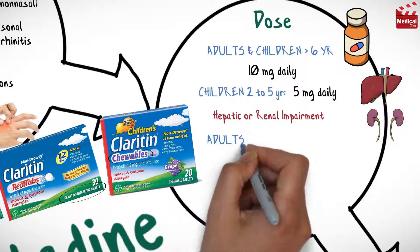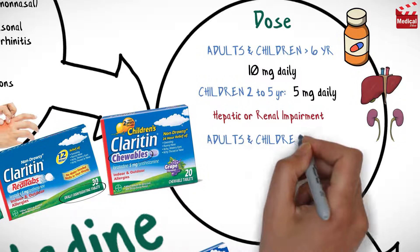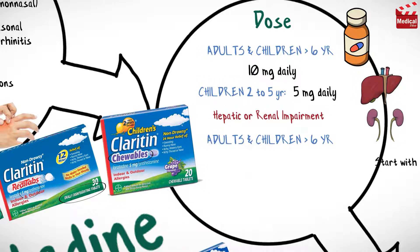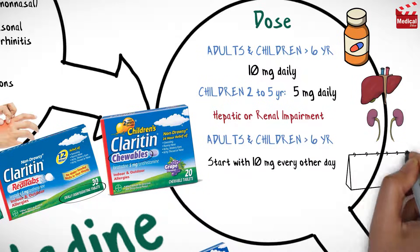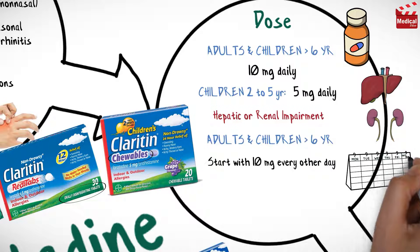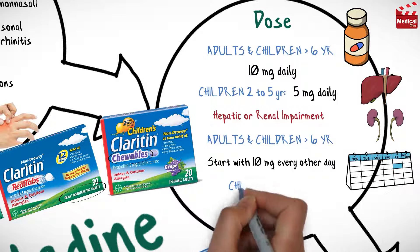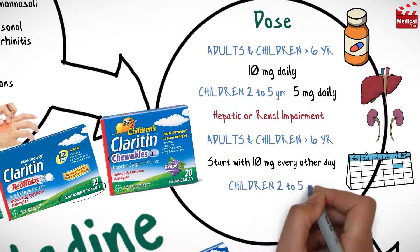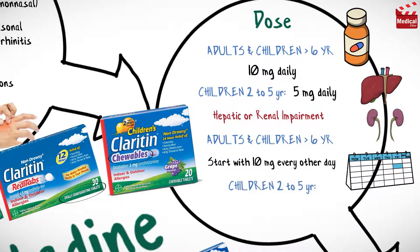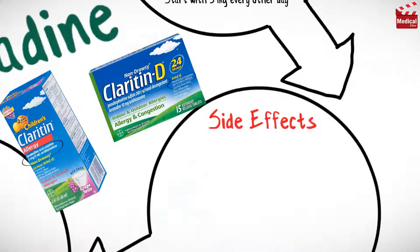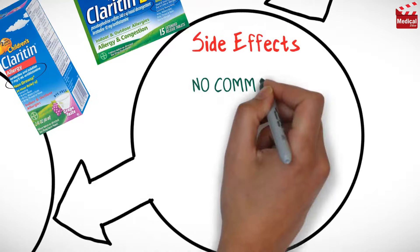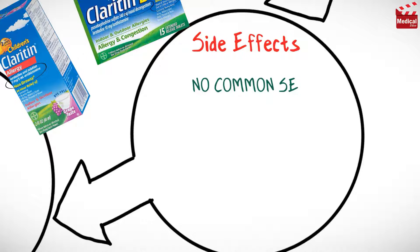In cases of hepatic or renal impairment, the usual dose for adults and children older than 6 years is to start with 10 milligrams every other day. For children from 2 to 5 years old, start with 5 milligrams every other day.